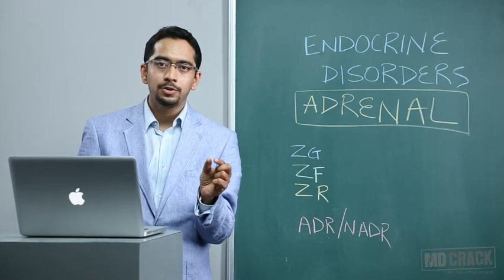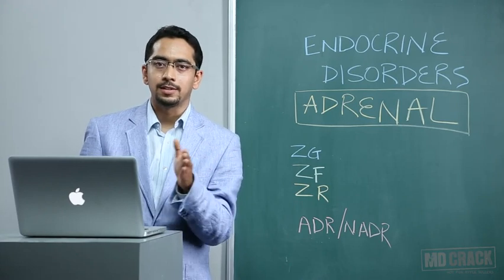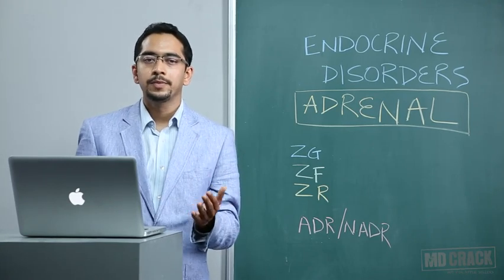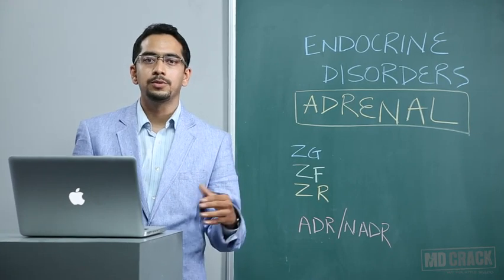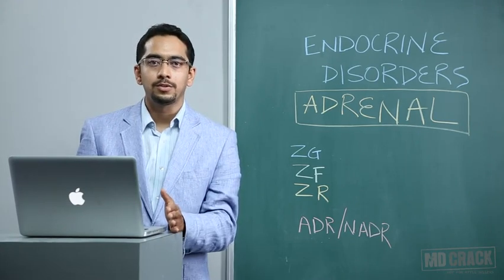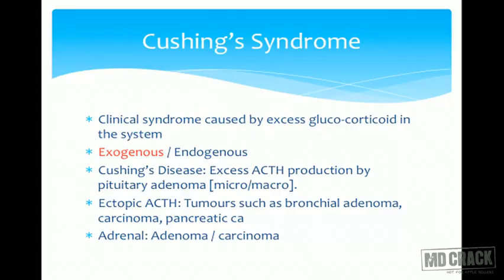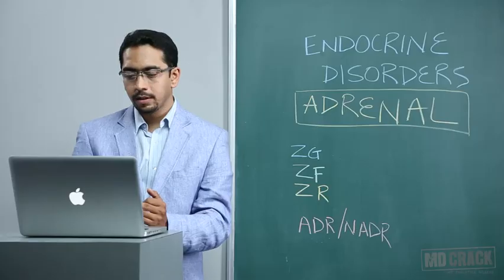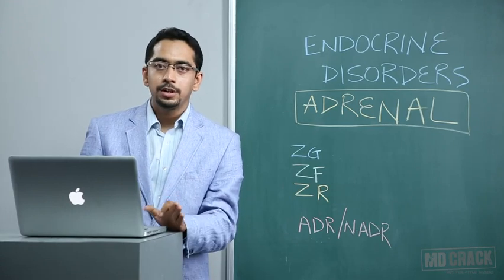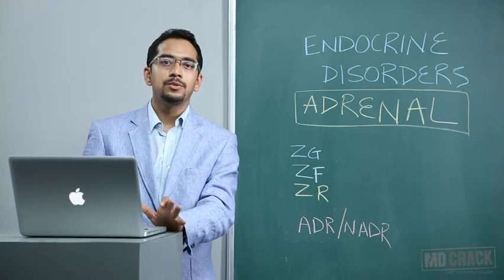Cushing's disease involves a pituitary microadenoma or macroadenoma — less than one centimeter is micro, more than one centimeter is macro — producing high ACTH levels that stimulate the adrenals to produce more cortisol. Pituitary ACTH-secreting adenoma is the most common cause of endogenous Cushing's syndrome. Ectopic ACTH production is a rare cause, with tumors such as bronchial adenoma, bronchial carcinoma, and pancreatic carcinoma. Remember these three tumors as they are often asked in relation to ectopic ACTH.